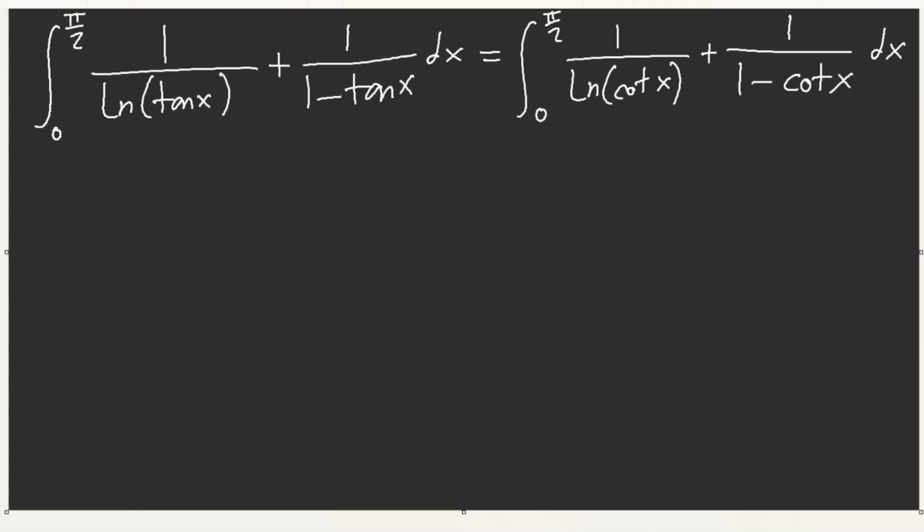But algebraically, this equals, if you know, multiply top and bottom by tangent of x. We get tangent of x over tangent of x minus 1. And, this is minus ln tangent x. Aha.